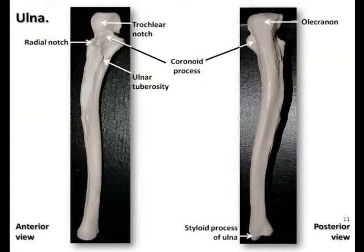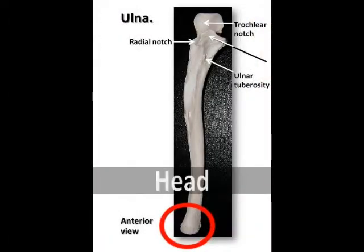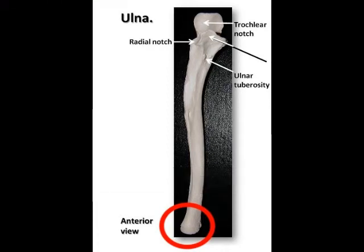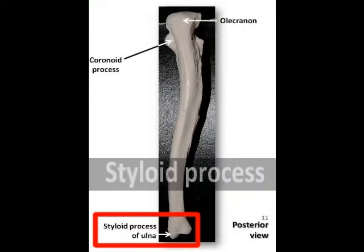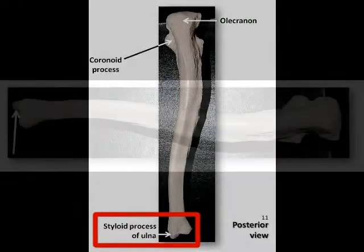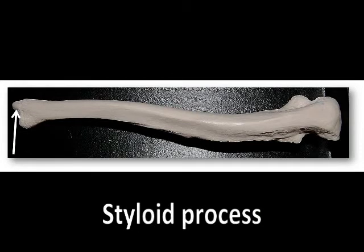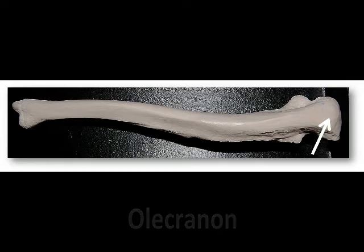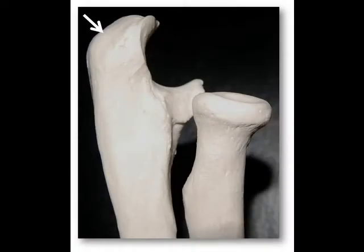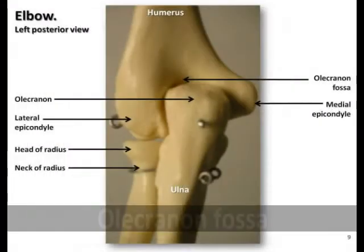Let's look at the bony landmarks of the ulna. The head of the ulna is located at its narrow distal end. It articulates with the carpals but is separated from those bones by a fibrocartilaginous disc. On the posterior side of the distal end is the styloid process, a small spine-like bony projection that serves as an attachment point for the ulnar collateral ligament, connecting it to the wrist. On the proximal end of the ulna is the olecranon, which is the hard bony process that forms the elbow. The olecranon articulates with the humerus by hooking into the olecranon fossa, a deeper depression located at the distal end of the humerus.